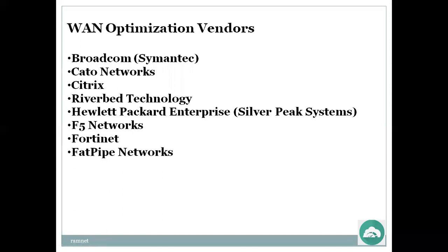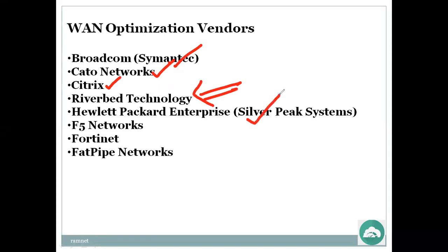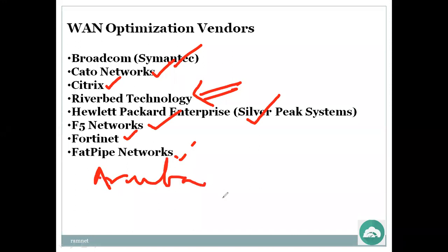Vendors producing WAN optimization boxes, virtual machines, or modules include: Broadcom, Symantec, Kato Networks, Citrix, Aryaka, Riverbed, Silver Peak, F5 Networks, Fortinet, FatPipe Networks, and Aruba. WAN optimizers are typically placed behind the router and firewall. In a Cisco environment, if the router has an extra WAN optimization module, the router itself faces the internet and does the optimization.